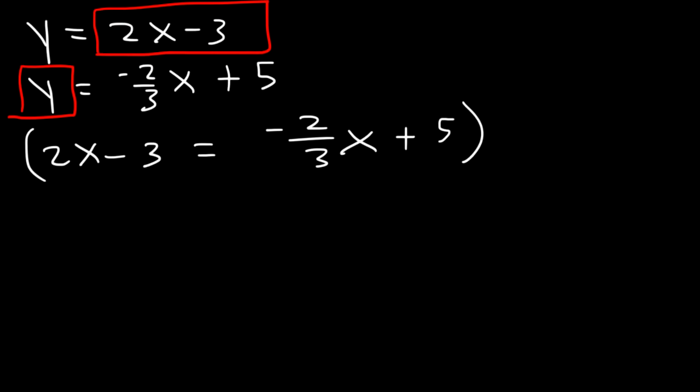Let's get rid of the fraction by multiplying everything by 3. So 2x times 3, that's equal to 6x. Negative 3 times 3 is negative 9. Now, what is negative 2 over 3 times 3? Well, if we write it out, 3 is the same as 3 over 1. You can cancel the 3 and you'll get negative 2. If you don't see it that way, you can multiply across. Negative 2 times 3 is negative 6, and 3 times 1 is 3. Negative 6 divided by 3 is negative 2. So you get the same answer whether you cancel or if you multiply across. So this is just going to be negative 2x. 5 times 3 is 15.